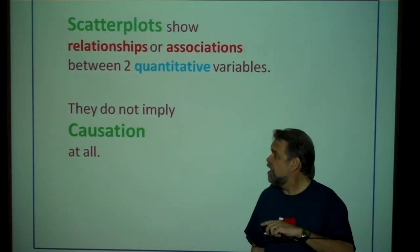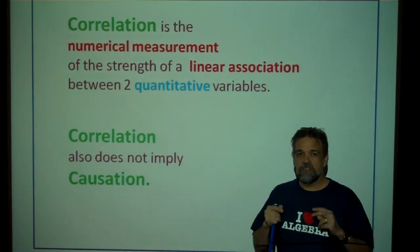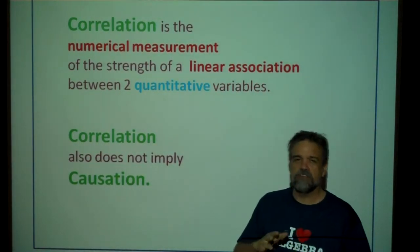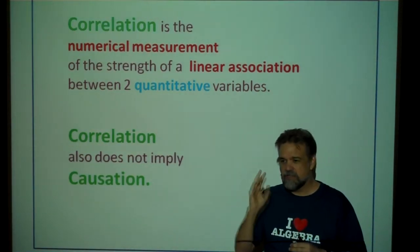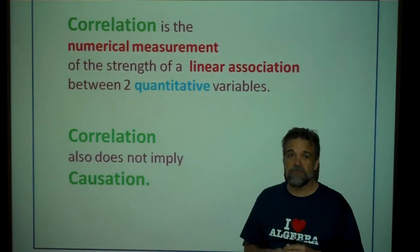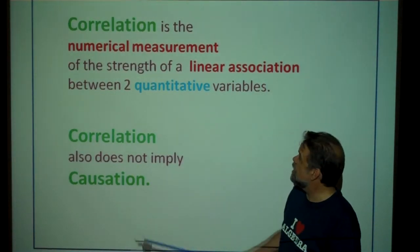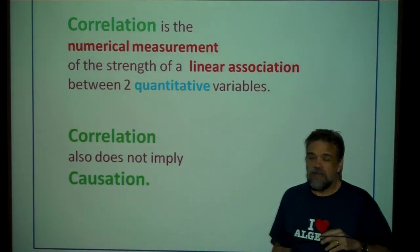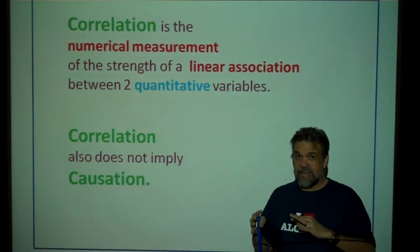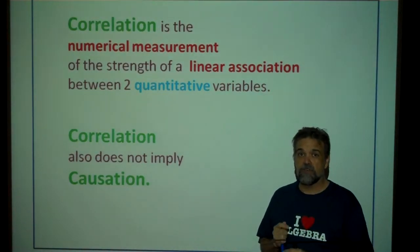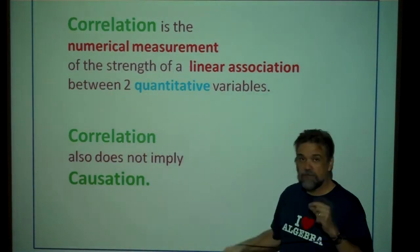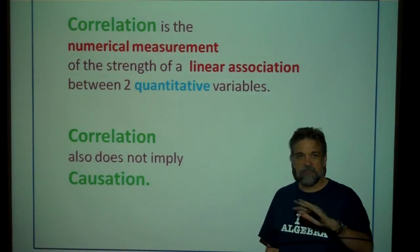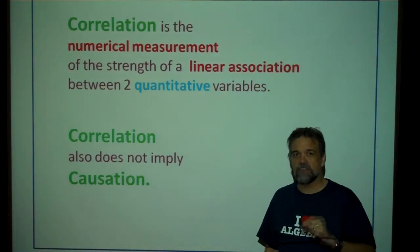Now let's talk about correlation. Correlation is a word that is misused all the time. You'll hear people say there's a strong correlation between gender and political affiliation — no, there's not. Correlation has to be between two quantitative variables, and gender and political affiliation are both categorical variables. In a stats class, we are very particular about what this means: it's a numerical measurement of the strength of the linear association. It has to be linear — not exponential, not quadratic, not logarithmic. It must be linear.